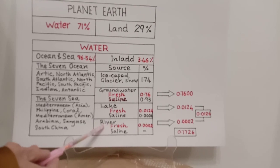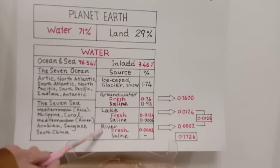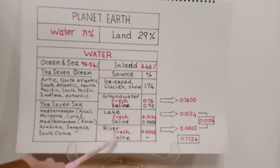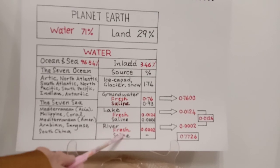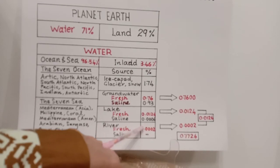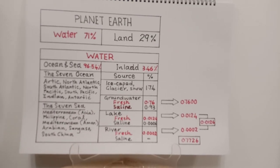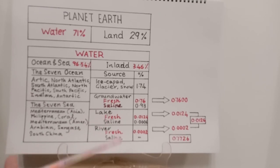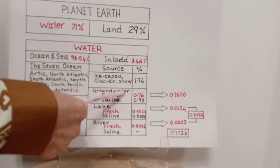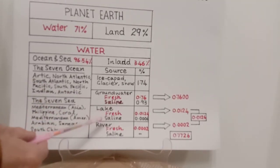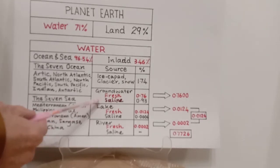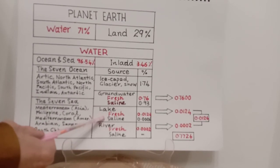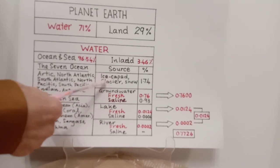The more familiar category is river water. The fresh portion of river water is 0.0002%, and the saline portion is almost unknown. What I want to show here is the actual amount of consumable water available to people, to mankind and civilization. The main resources are three: groundwater, lake, and river water.